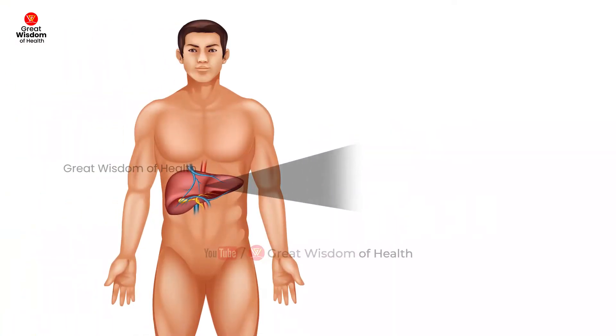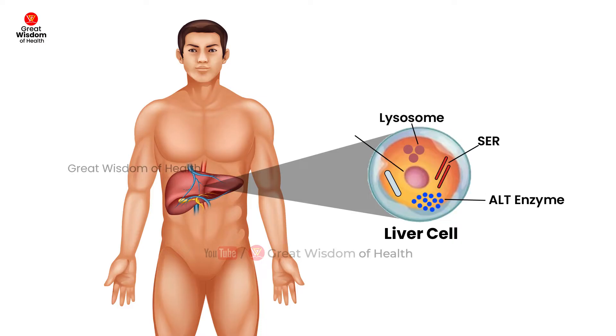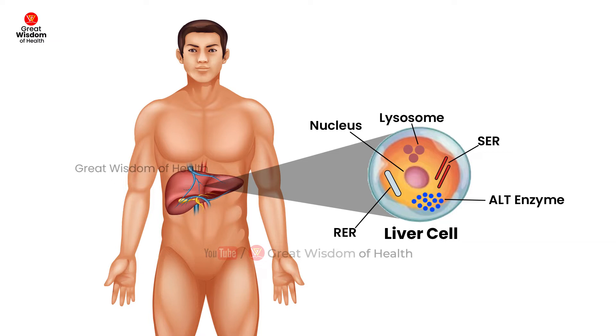When liver cells are damaged, the ALT enzyme is released from the liver and mixed into the bloodstream. High levels of ALT are a sign of a liver disease.